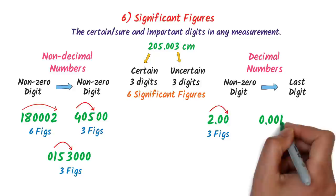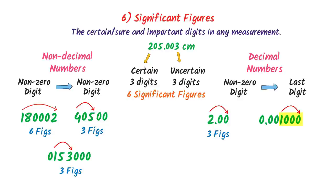For a third decimal number with the first non-zero digit being 5, going to the last digit gives 5 total digits — so 5 significant figures. Using this simple trick, we can easily learn significant figures.